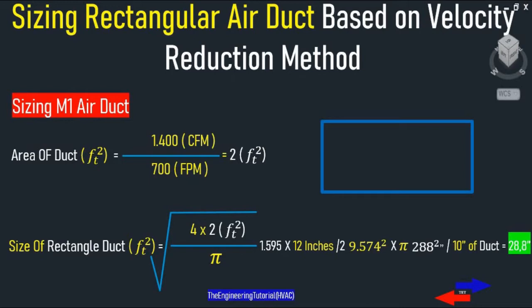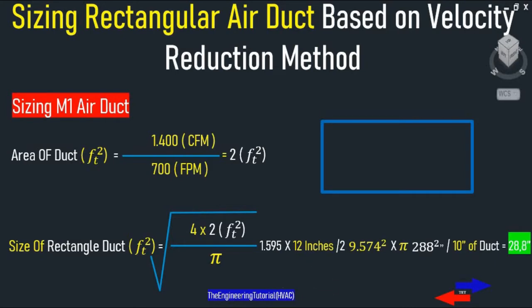So 288 square inches can be divided by the height or width of the main supply duct based on your needs. You can determine how many inches the height of your duct needs to be. For example, if we want the height of our main supply duct to be 10 inches, we simply divide 288 square inches by 10 inches, which gives us 28.8 inches width. So the duct size is 28.8 by 10 inches.